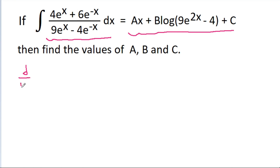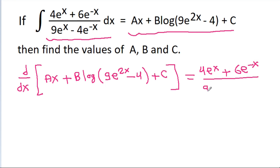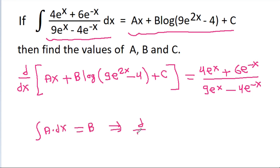That means the differentiation of ax minus b·log(9e^(2x) minus 4) plus c will be equal to (4e^x plus 6e^(−x)) divided by (9e^x minus 4e^(−x)), because if integration of a dx equals b, then differentiation of b equals a.